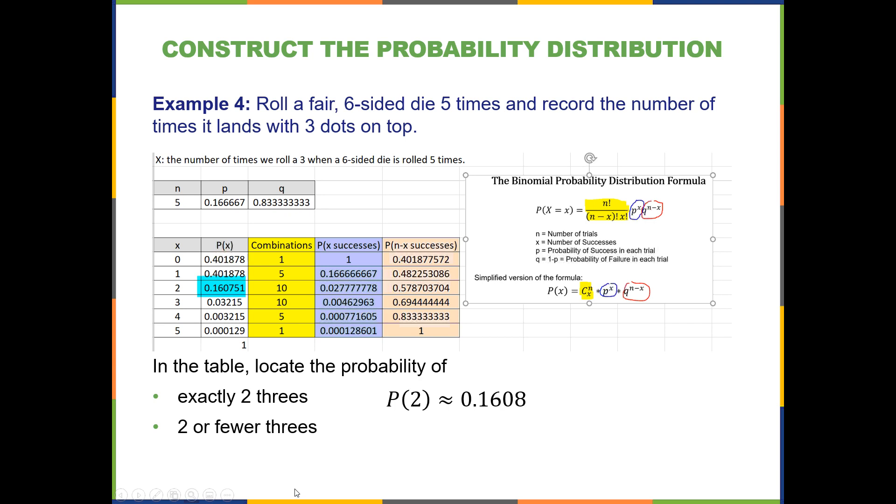Or we could calculate two or fewer threes. So let's say we would consider it favorable if we rolled a three twice out of the five, or once out of the five, or zero out of the five. And so in that case, you would need to add these three probabilities together because it's an or, right? Two or one or zero. So let's add all those probabilities together using the addition rule. So that would give us the probability of X less than or equal to two is 0.9645.